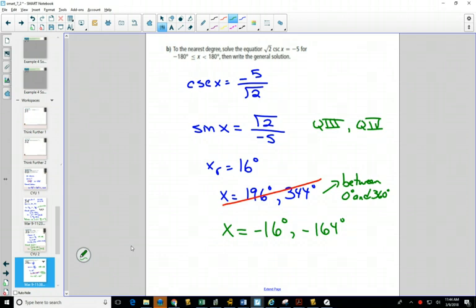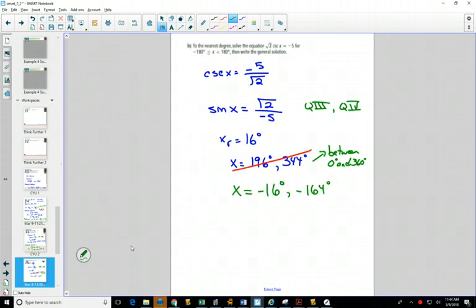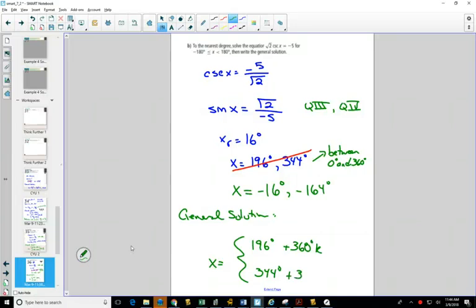To write your general solution, x equals, you take your two answers between 0 and 360, add 360 degrees times k for your coterminal angles, and you've written your general solution.